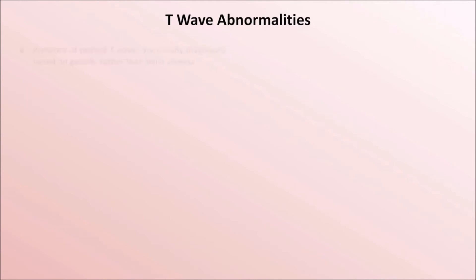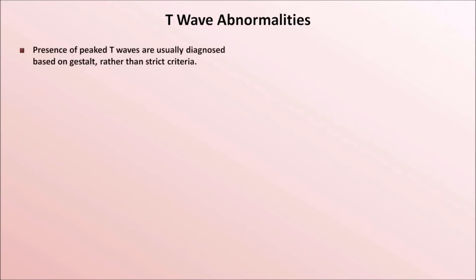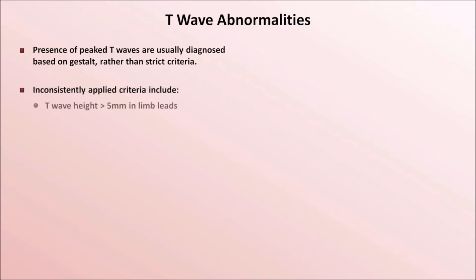Finally, T waves may be unusually tall and/or peaked. The presence of peaked T waves is usually diagnosed based on gestalt rather than on strict criteria. However, inconsistently applied criteria include a T wave height of greater than 5 mm in the limb leads or 10 mm in the precordial leads.